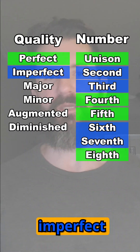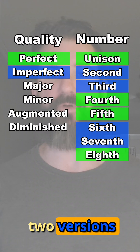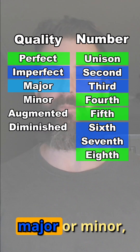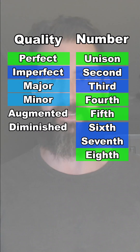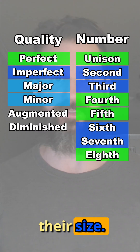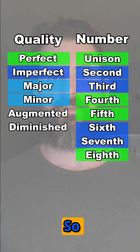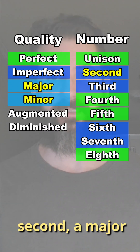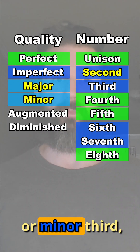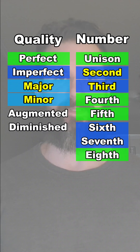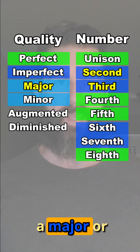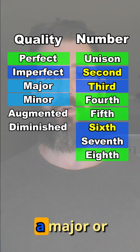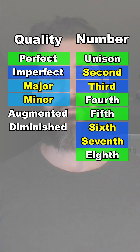Each of the imperfect intervals have two versions which are called either major or minor depending on their size. So we can have either a major or minor second, a major or minor third, a major or minor sixth, or a major or minor seventh.